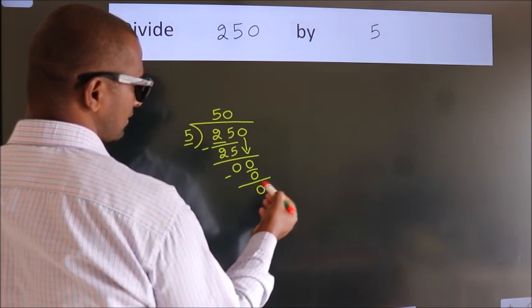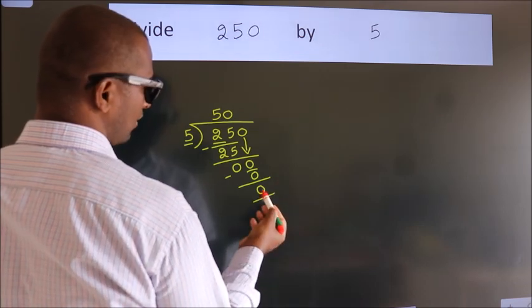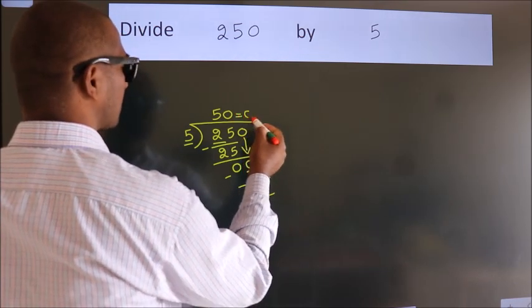After this, no more numbers to bring it down. And we got remainder 0. So this is our quotient.